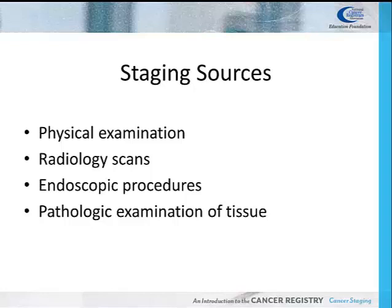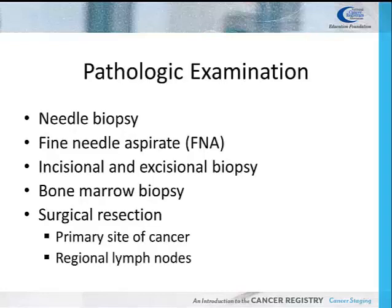Pathology reports of tissue that is biopsied or resected and examined by a pathologist. The most common and accurate way to diagnose cancer is by microscopic examination of the tissue. There are many methods of pathologic examination: needle biopsy, when a core tissue is taken from the tumor; fine needle aspirate, or FNA, the removal of cytology or fluid from the tumor; incisional biopsy, a portion of the tumor is cut out; excision biopsy, a resection of the whole tumor; bone marrow biopsy, tissue is removed from the bone; and surgical resection, removal of the primary site of cancer, which usually includes the regional lymph nodes as well.